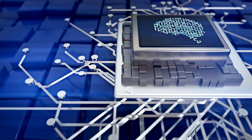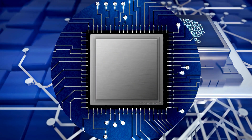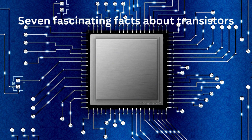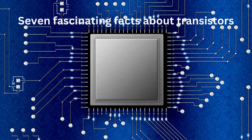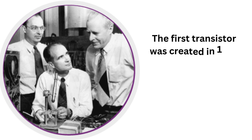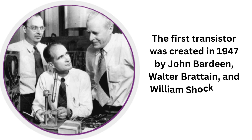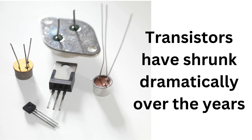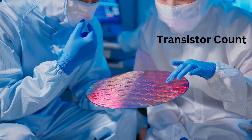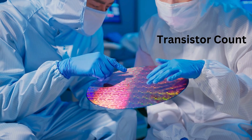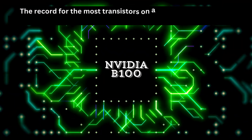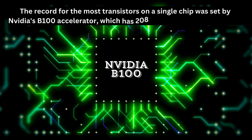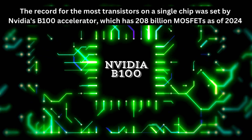That's an incredible amount of tiny switches working together to process data. Here are seven fascinating facts about transistors. First, the transistor was created in 1947 by John Bardeen, Walter Brattain, and William Shockley at Bell Labs. Second, transistors have shrunk dramatically over the years — the first transistors were the size of a finger, while modern transistors can be smaller than a nanometer. Third, the record for the most transistors on a single chip was set by NVIDIA's B100 Accelerator, which has 208 billion MOSFETs as of 2024 — and this number increases every year.